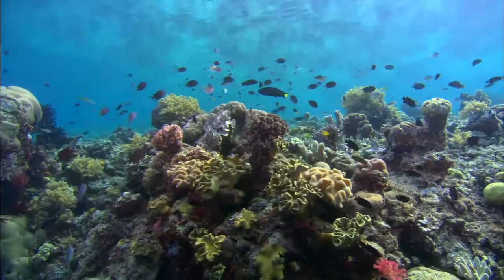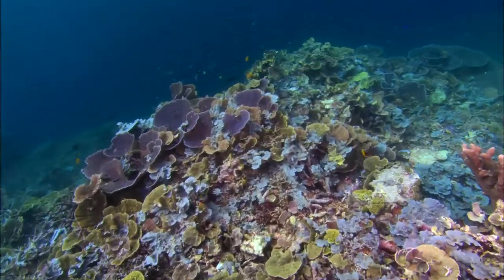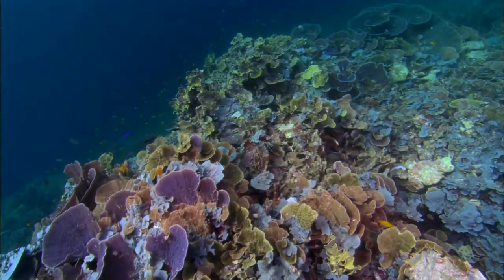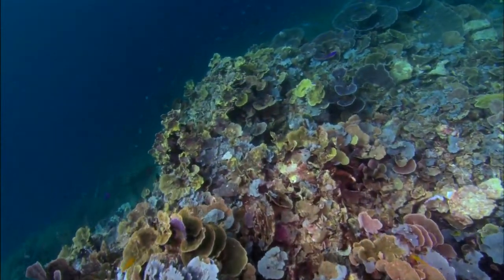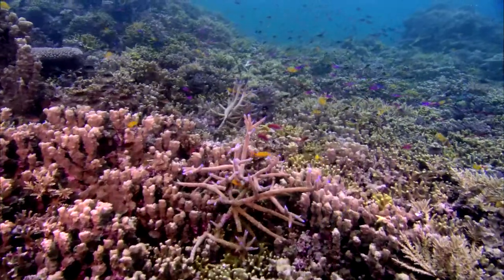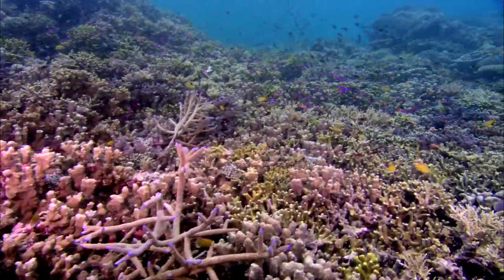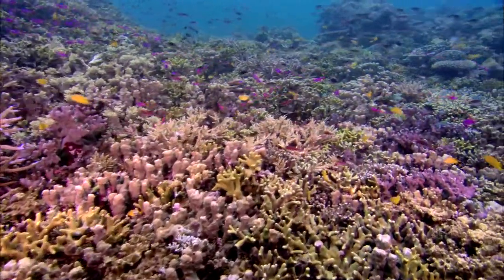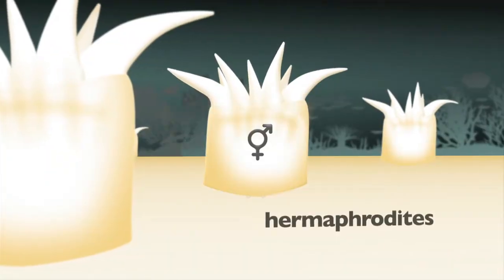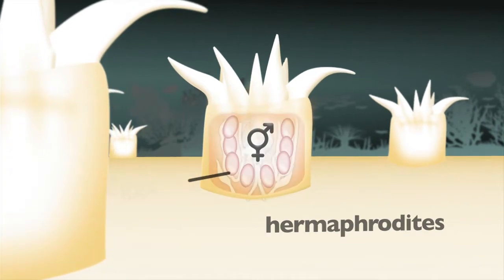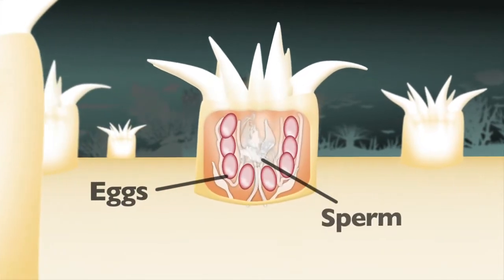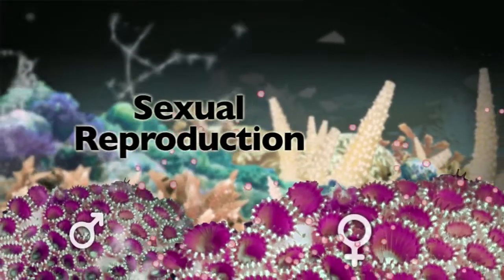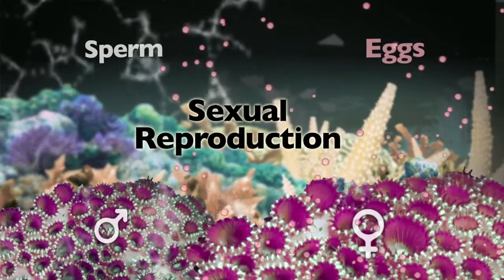Corals also use sexual reproduction to increase the genetic diversity of the offspring, and they do this in a number of different ways. In terms of the sexual patterns, most of the more than 440 different coral species that have been studied around the world so far are what we call hermaphrodites. This means that they develop both eggs and sperm within each of their polyps, so they have both sexes present. Other types of corals have separate sexes.